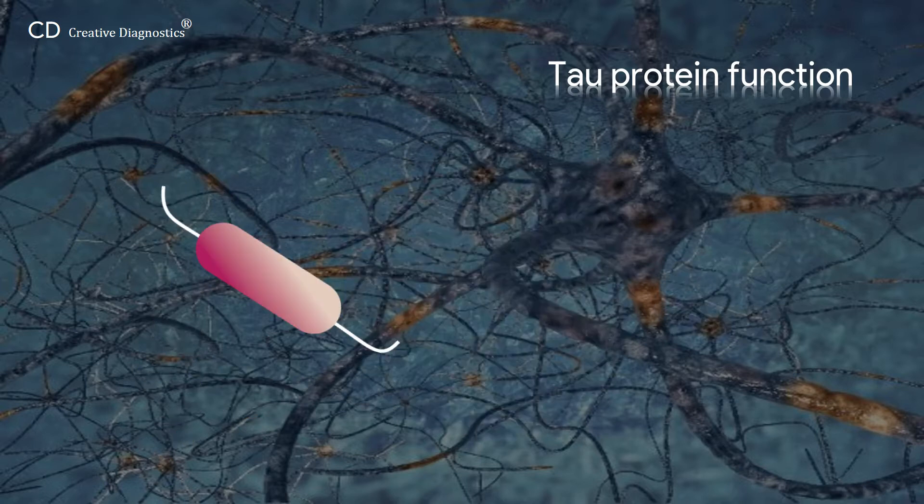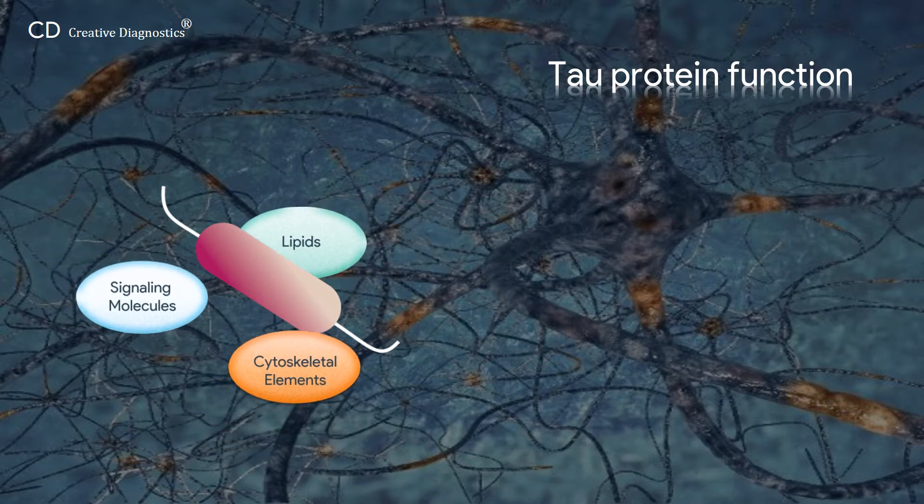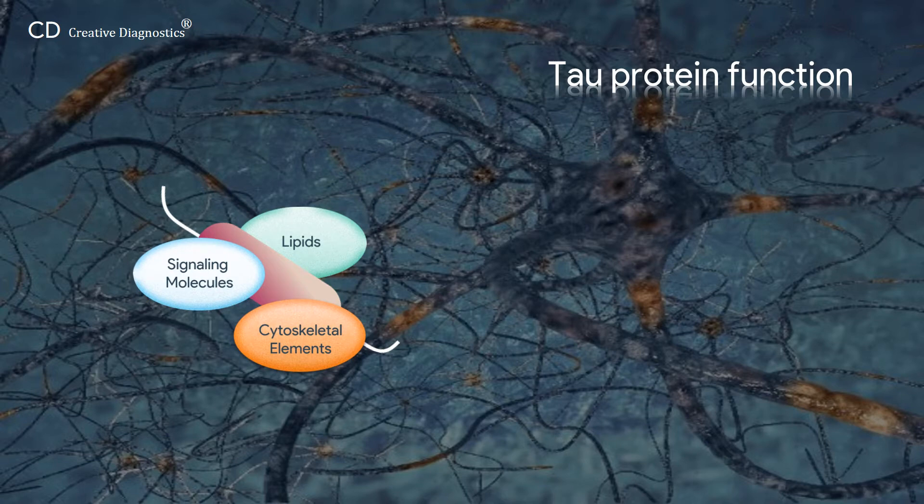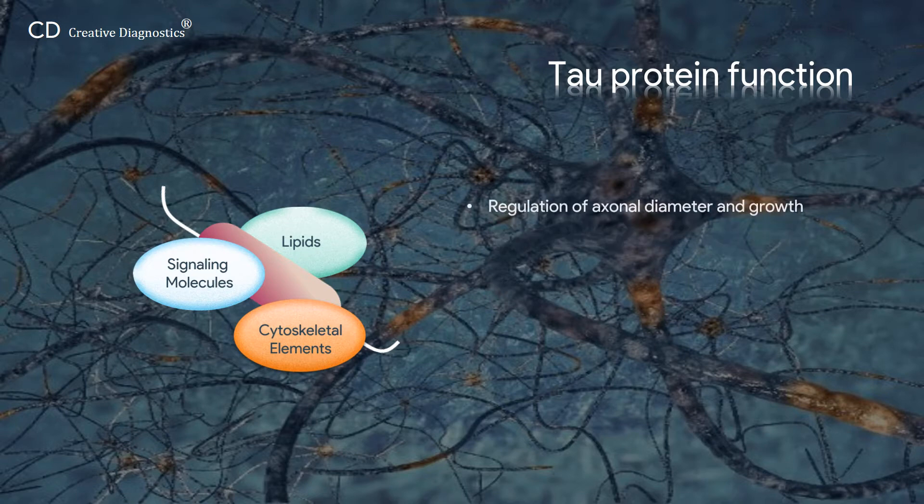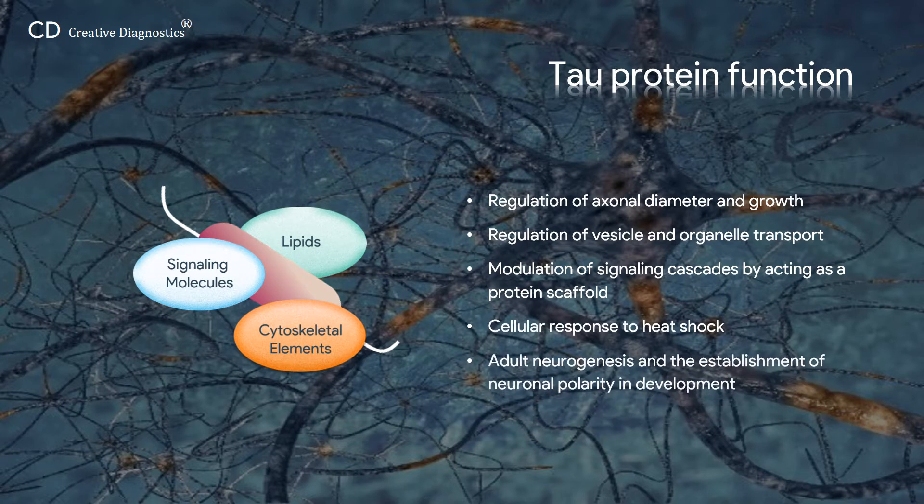However, via the selective binding of diverse partners, such as signaling molecules, cytoskeletal elements and lipids, Tau participates in multiple physiological processes including regulation of axonal diameter and growth, regulation of vesicle and organelle transport, modulation of signaling cascades by acting as a protein scaffold, cellular response to heat shock, adult neurogenesis and the establishment of neuronal polarity and development.